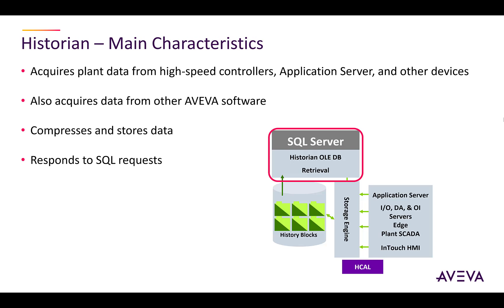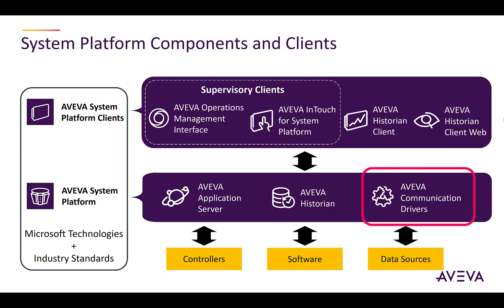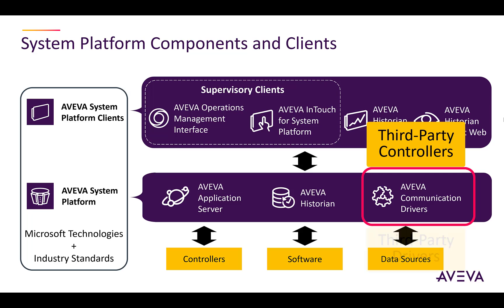Historian also contains event, alarm, summary, configuration, security, backup, and system monitoring information. Next are the Aviva communication drivers. The drivers are provided to communicate with third-party controllers. These come in from the OI servers and legacy DA and IO servers. If needed, System Platform also works with third-party drivers such as OPC servers.